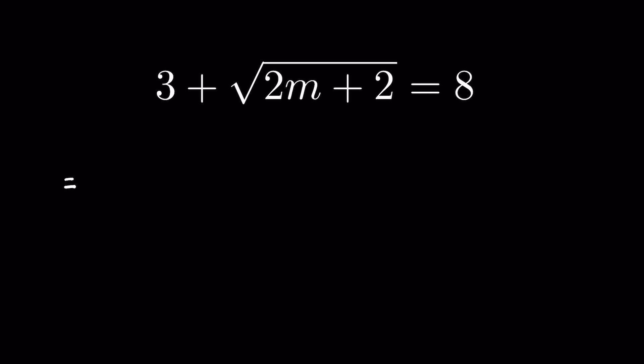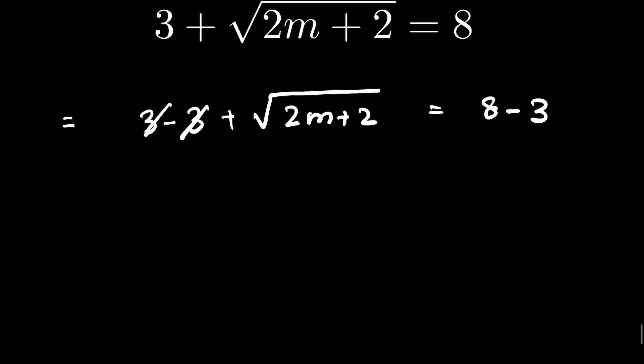Let's subtract 3 from both sides. This 3 and this 3 get cancelled. We have square root of 2m plus 2 equals 8 minus 3, which is 5.